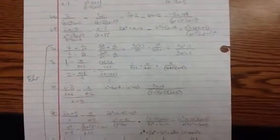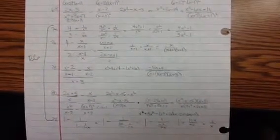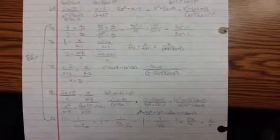Number 76, I got x over x plus 1. Number 78, I got negative 5x plus 4 over x plus 1, x minus 2 and x plus 3.